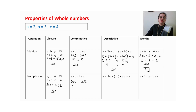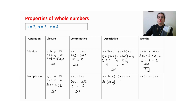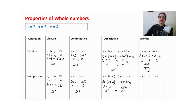For associative property in multiplication: (2×3)×4 equals 2×(3×4). Solving brackets first: 3×4=12, then 2×12=24. Other side: 2×3=6, then 6×4=24. Left hand side and right hand side are equal, so yes, we can observe associative property for multiplication of whole numbers.